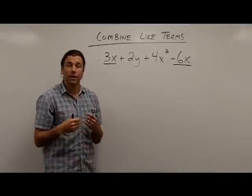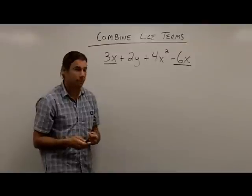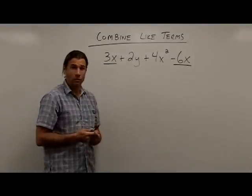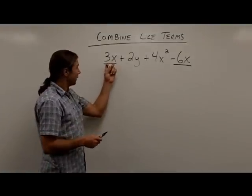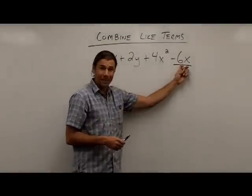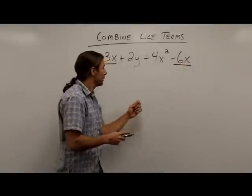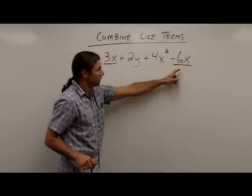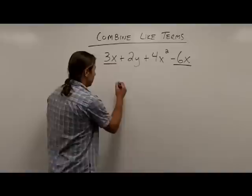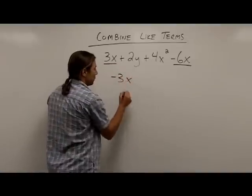So what we do with an expression where we have like terms is we combine them together. We do that by adding the terms. The like terms I have here are 3x and a negative 6x, so I'm going to add these terms together. So if I add a 3x and a negative 6x together, it's going to give me negative 3x.